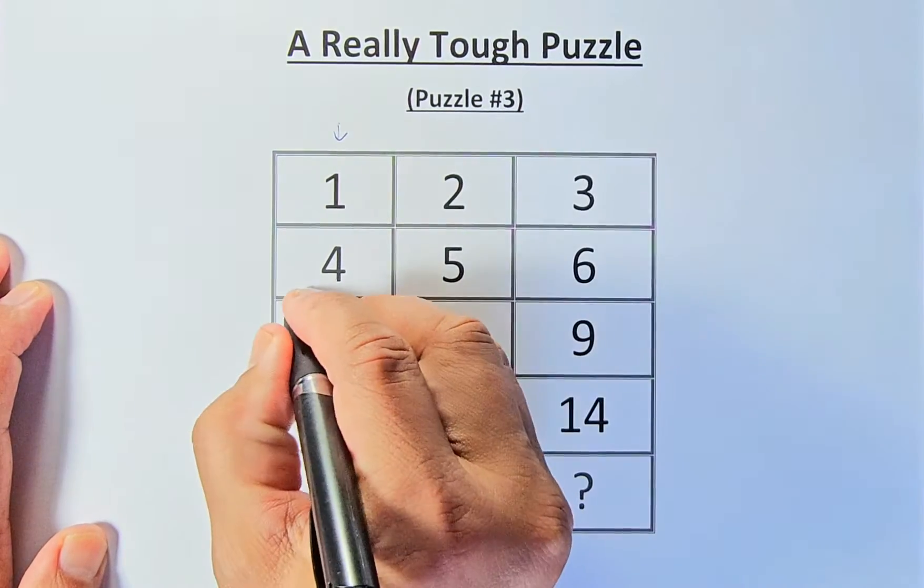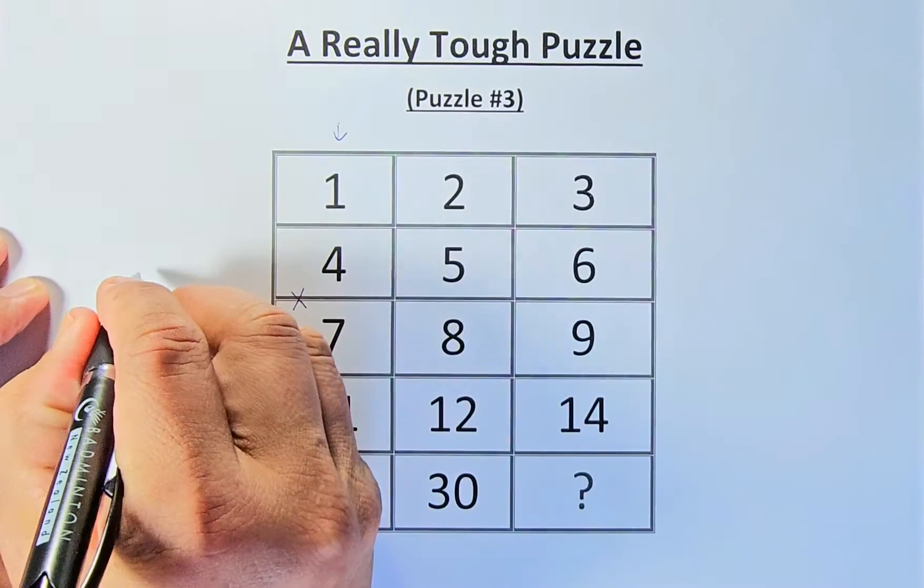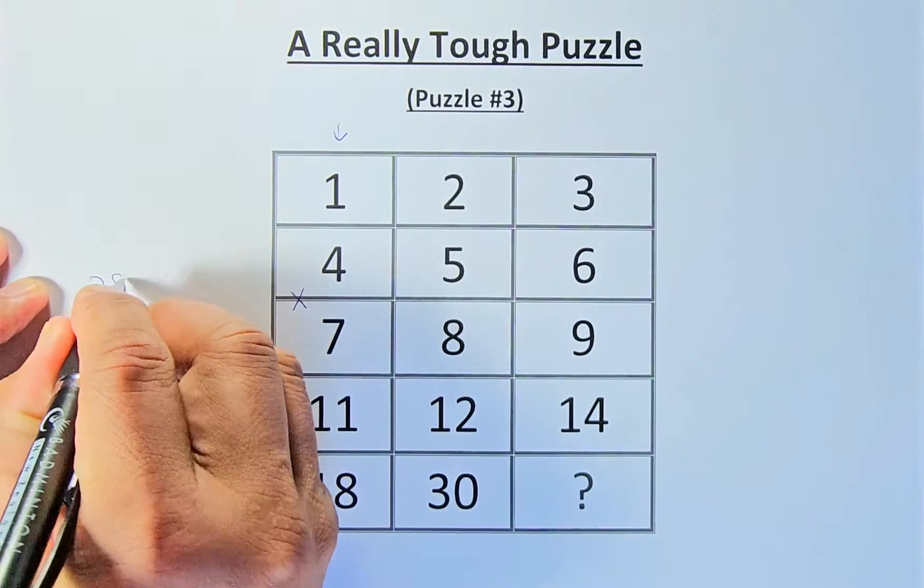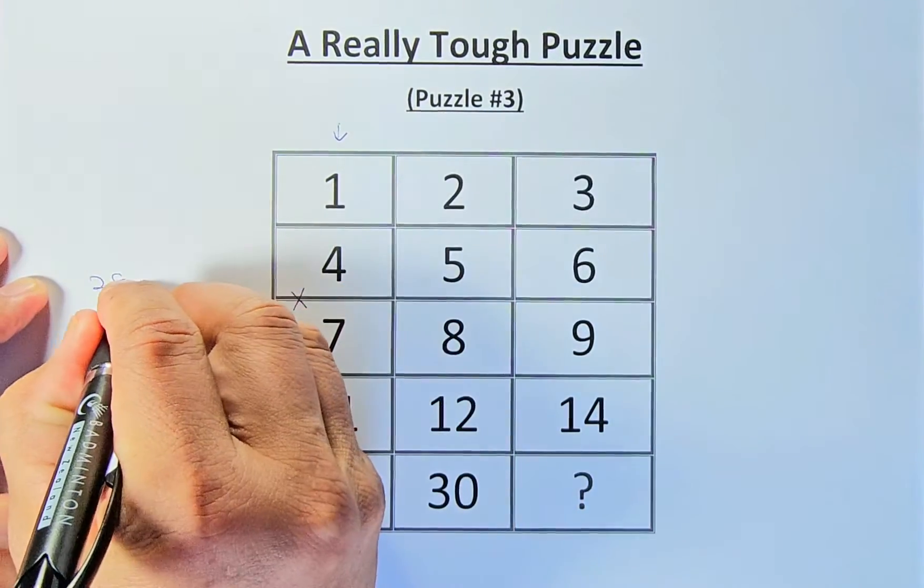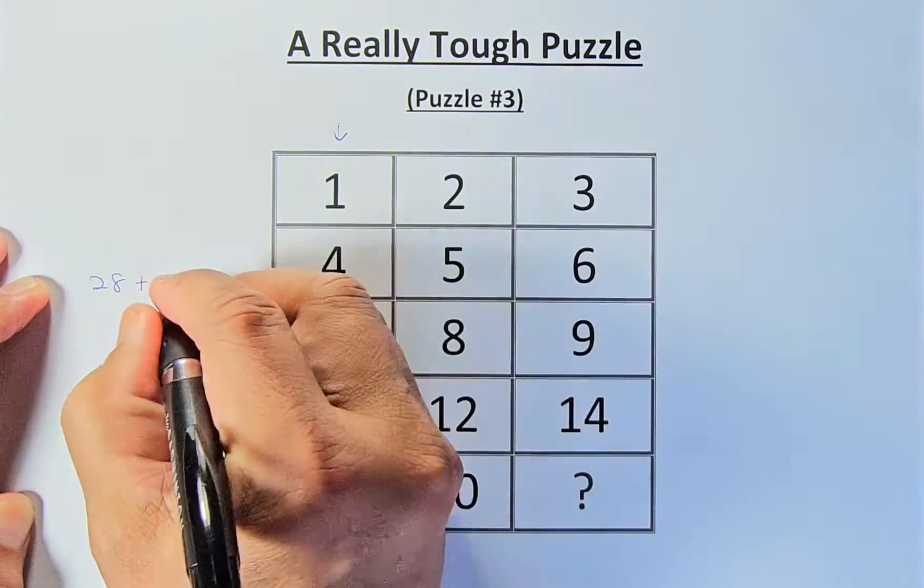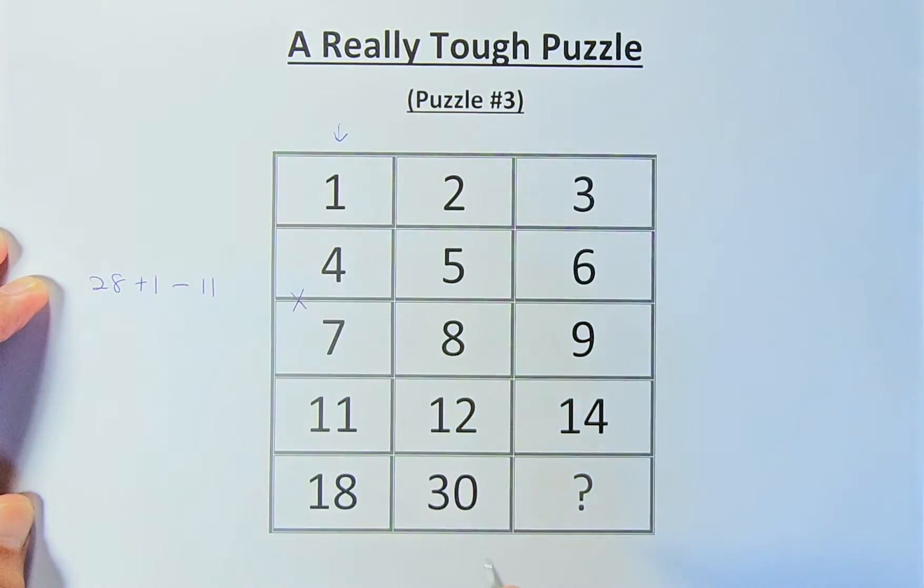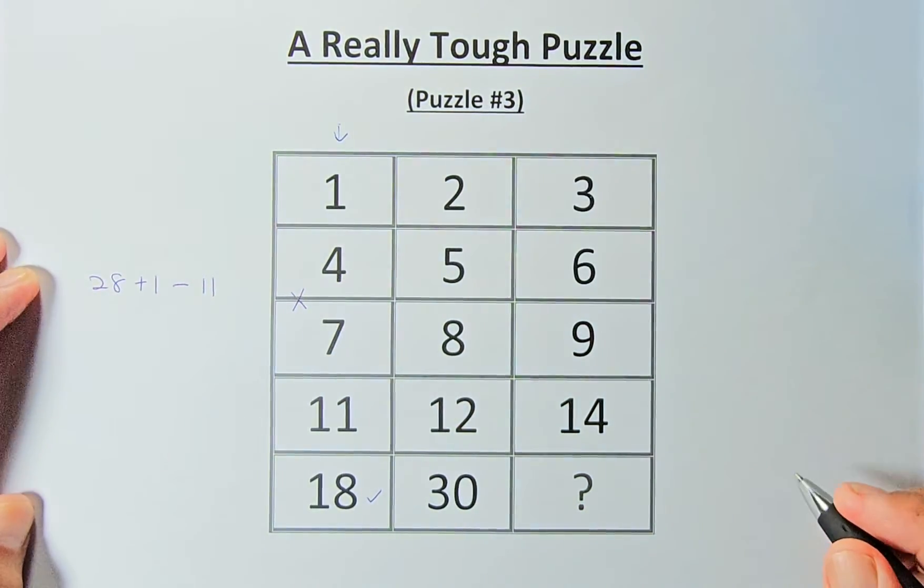To get 18, we multiply 7 and 4, which gives us 28. Then we add 1, giving us 29. Then we minus 11, so 29 minus 11 gives us 18.